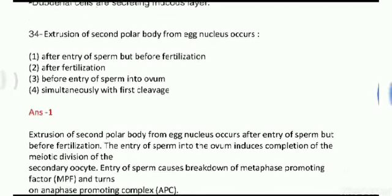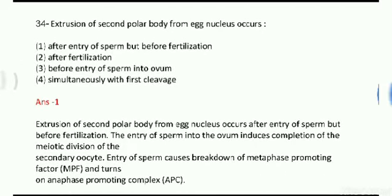Next question: extrusion of the second polar body from the egg nucleus occurs when? This is a direct question from the human reproduction part, specifically from oogenesis. The question is asking about the extrusion of the second polar body. In oogenesis, two polar bodies are formed.